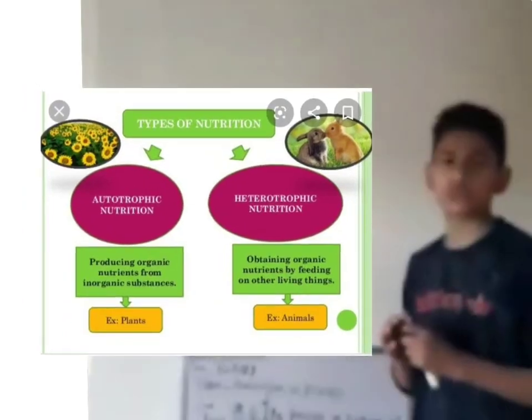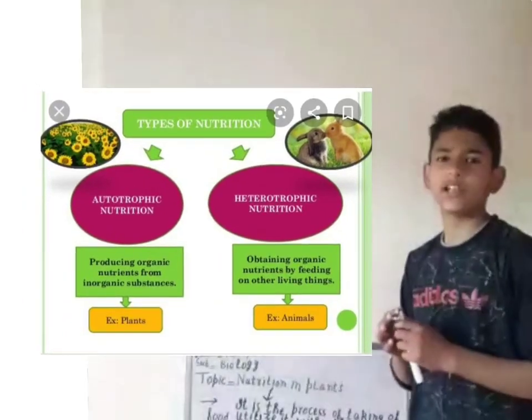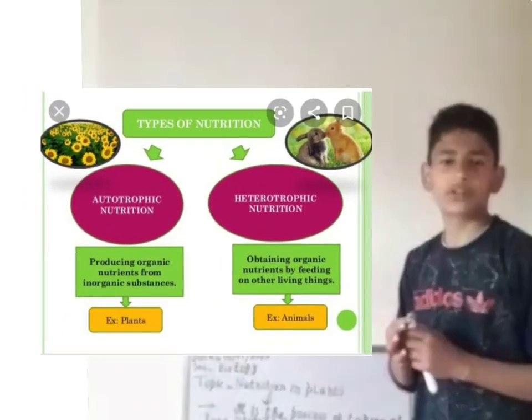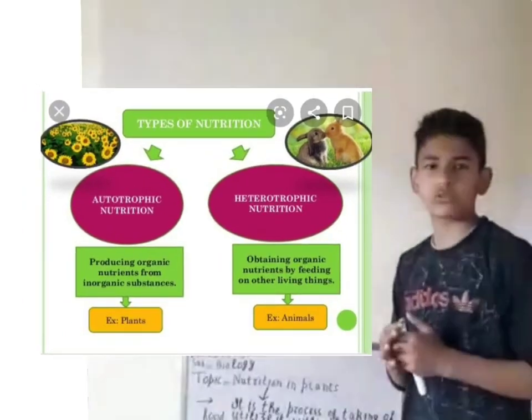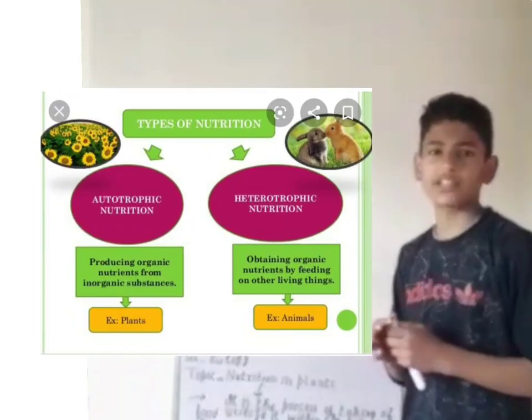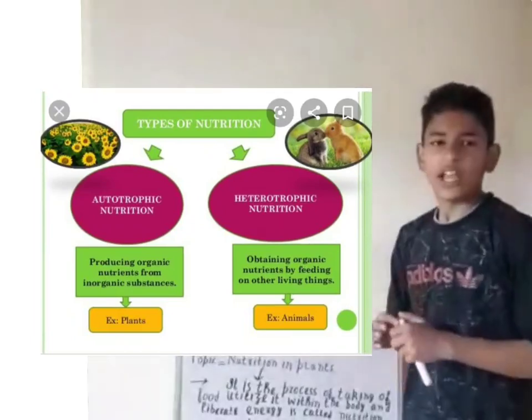Water comes from roots through the soil, carbon dioxide comes from the atmosphere through stomata, and sunlight is present in the environment.